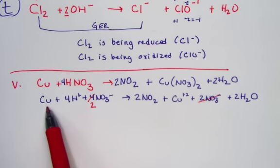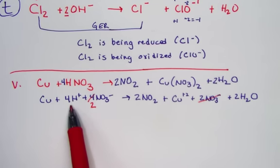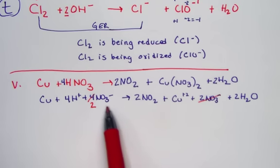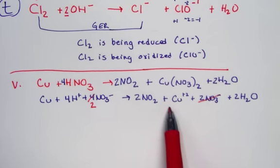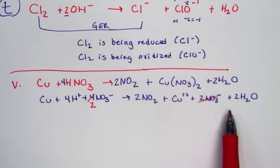Our final answer is Cu plus four hydrogen ions plus two nitrates yield two nitrogen dioxide molecules, a copper plus two ion, and two water molecules.